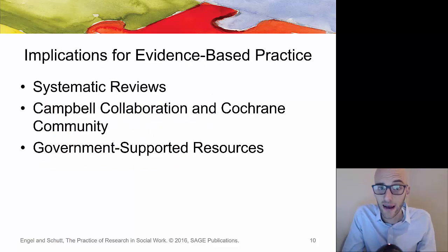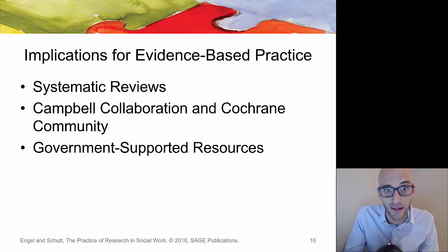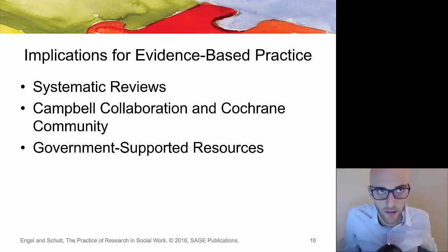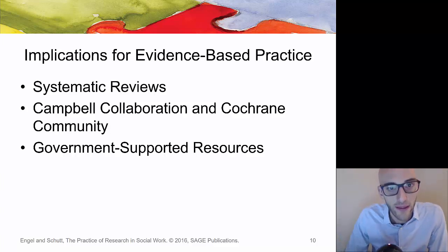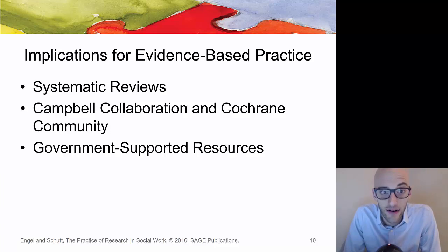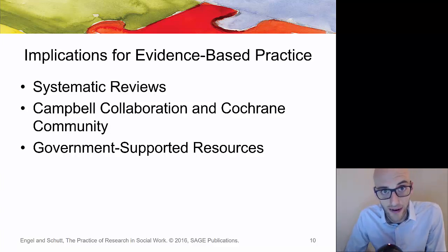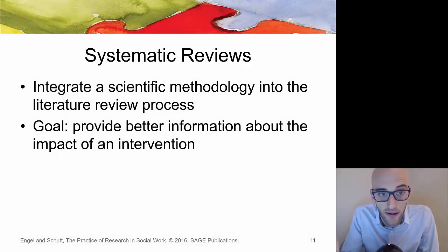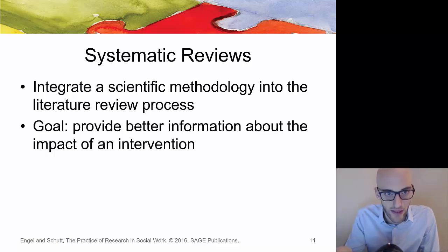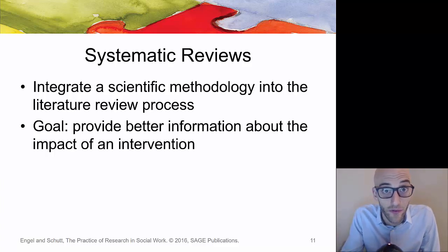For evidence-based practice, if you're interested in clinical work, a systematic review of a specific intervention for a specific population lets you look at the evidence to see whether there is support for that intervention with the population you're working with. You can use databases like the Campbell Collaboration or the Cochrane Community — both great social work resources providing peer-reviewed literature on best practices. A systematic review also integrates scientific methodology into the literature review process.